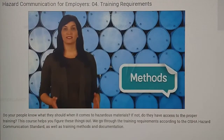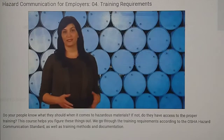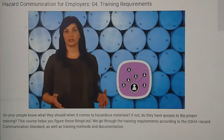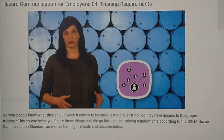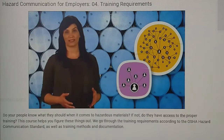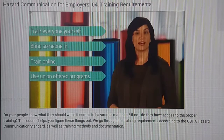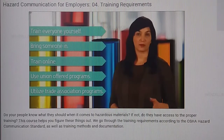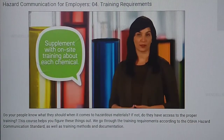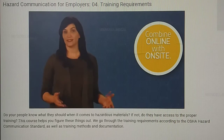When it comes to methods for training, the standard is pretty flexible. You can conduct training however you see fit, as long as the key elements are covered. If your workplace only has a few chemicals in use, you might teach staff about each one individually. If your team is working with many different chemicals, or the types vary or change frequently, it might make more sense to conduct a large-scale training session for the entire team. You can conduct the training yourself, bring someone in, train employees online, or take advantage of hazard training programs offered by unions, trade associations, or other educational institutions. If you opt for online or other training, remember you'll need to supplement with on-site training about each chemical. Combining online training with an on-site session can be the perfect combination, as it meets different learners' needs and is easily documented.